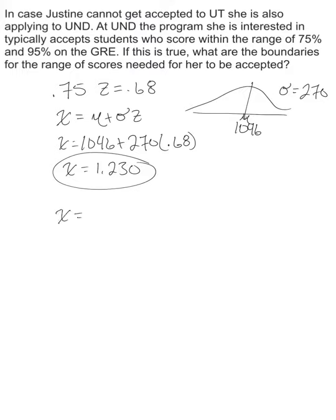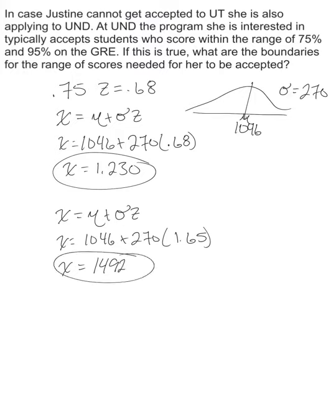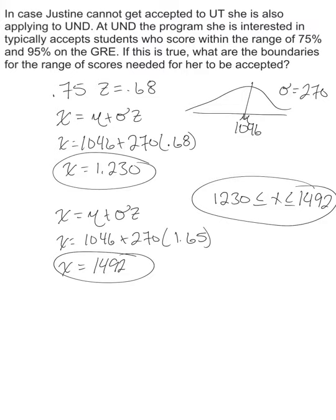Now the upper limit: using the same formula with Z = 1.65 — 1046 plus 270 times 1.65 equals 1046 plus 445.5, giving a raw score of approximately 1,492. So Justine needs to score between 1,230 and 1,492 to be accepted into UND's program — anywhere in that range and she's good.